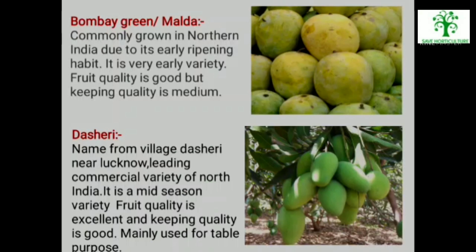Bombay Green or Malda: It is commonly grown in Northern India due to its early ripening habit, and is called Malda in Northern India. It is a very early variety. Fruit quality is good but keeping quality is medium. Dashehari: This variety derives its name from the village Dashehari near Lucknow. It is the leading commercial variety of North India and one of the best varieties in the country. It is a mid-season variety. Fruit quality is excellent and keeping quality is good. Mainly used for table purpose.